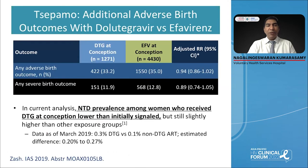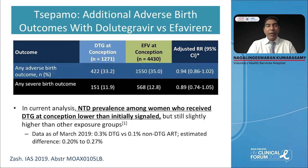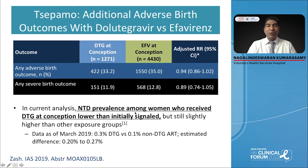Can you give dolutegravir in pregnant women? TSEPAMO is a large ongoing observational study in Botswana — a pregnancy registry capturing all women who become pregnant on any type of antiretroviral therapy. Dolutegravir previously showed some signals of neural tube defects, especially among women who initiated in the first trimester. Subsequent reports very clearly show it has been quite safe — NTD prevalence among women who received dolutegravir at conception has been lower than initially signaled — thereby it is now clearly recommended for all populations including pregnant women or women who want to become pregnant.